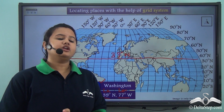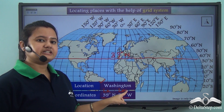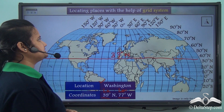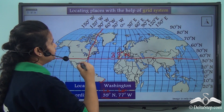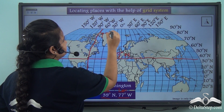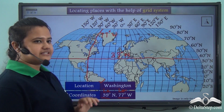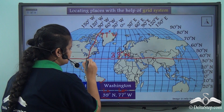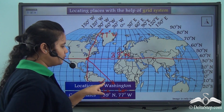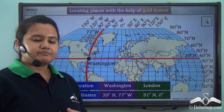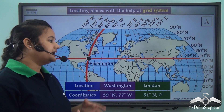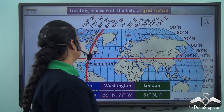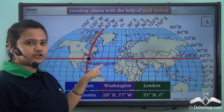Now for the longitude of Washington, it is 77 degree west. So 77 degree west will lie somewhere between 90 degree west and 60 degree west. The intersection of this 77 degree west longitude and 39 degree north latitude gives the exact and accurate location of Washington city.